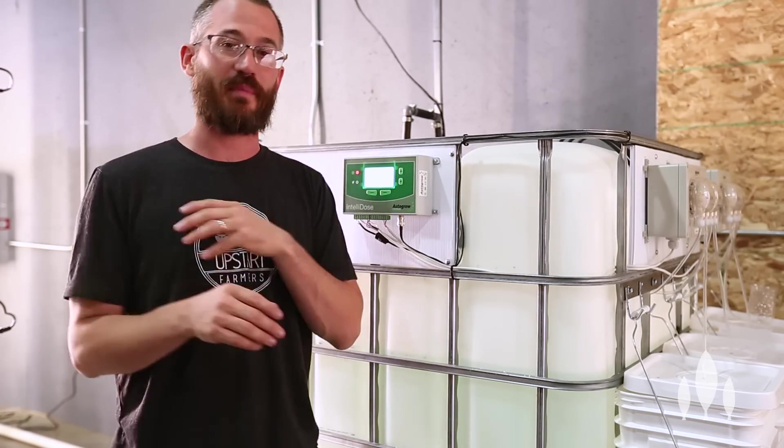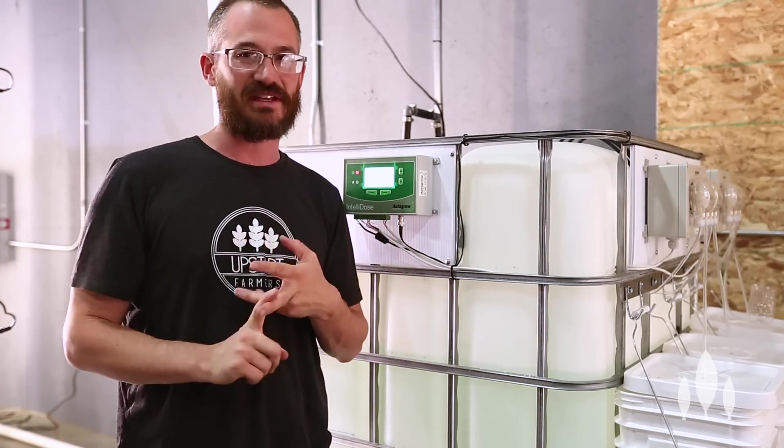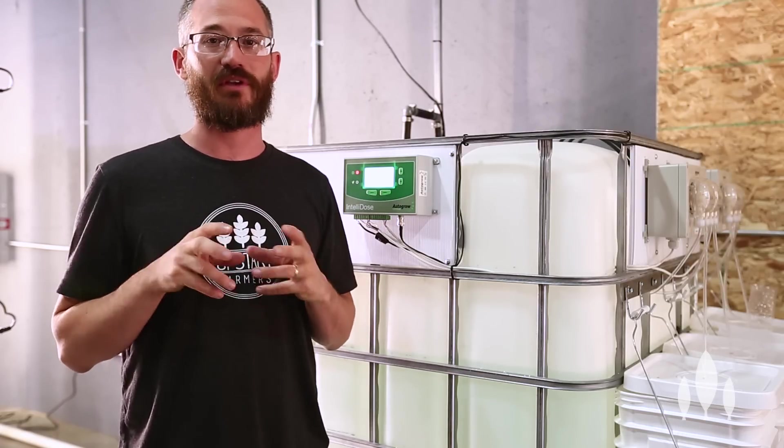So autodosing systems are basically systems that are monitoring your pH, your temperature, your EC, all kinds of these different water variables, and they're changing those variables in real time.